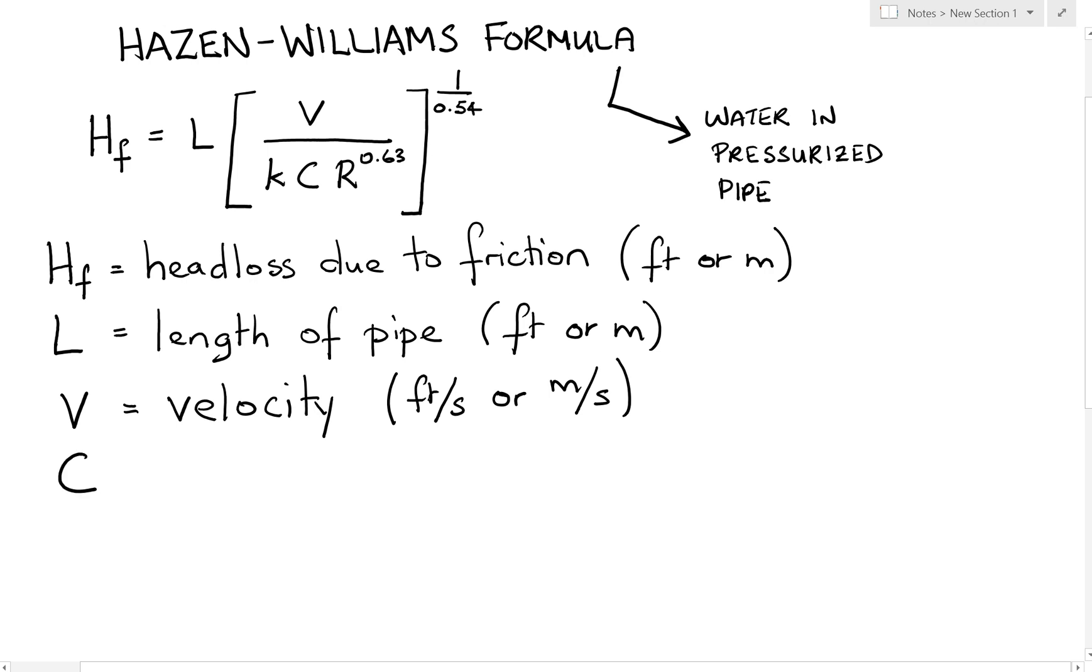Next up is the C value, and that's what they call a roughness coefficient. It is unitless, does not have units. Typical values if you're talking about PVC, which is a very common pipe material in water distribution systems, then you're seeing a C value maybe of 140 to 150. If you're talking about concrete, then that would be somewhat lower. So for example you may have a C value of 110, 120, maybe even 100.